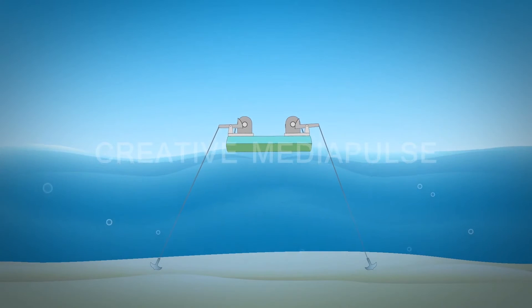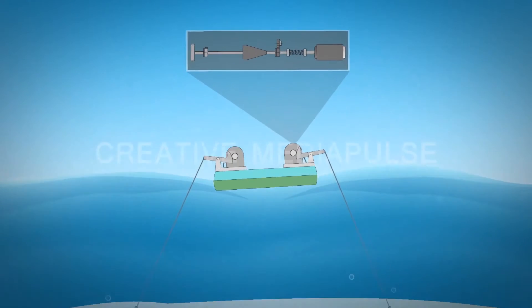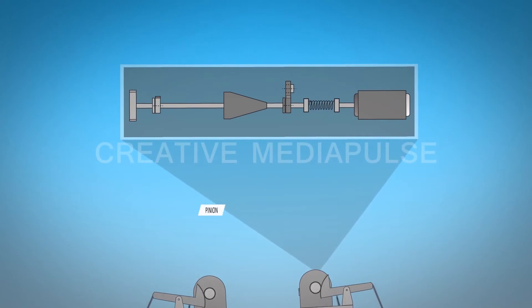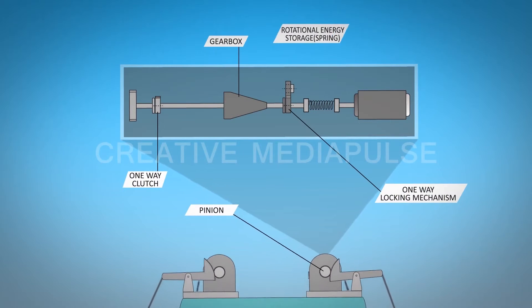The movement of a lever arm is coupled with a WEC unit. Each WEC unit consists of one-way clutch gearbox, one-way locking mechanism, spring for temporary energy storage, and a generator.